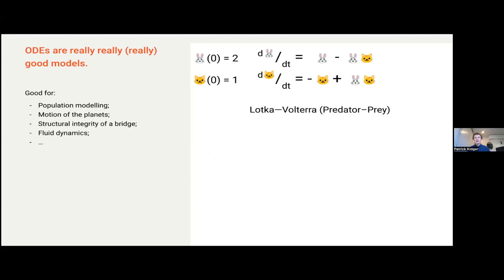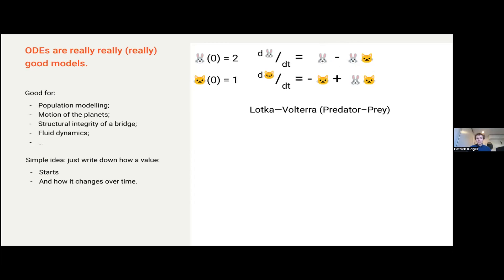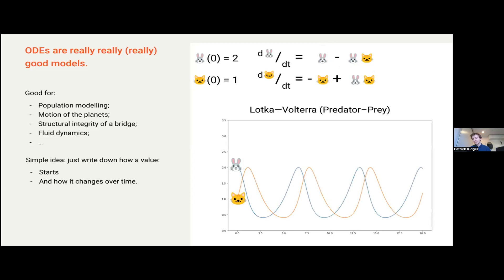These are the Lotka-Volterra predator-prey equations. This is a standard off-the-shelf theoretical model describing the relationship between a predator species — denoted by cats — and a prey species denoted by rabbits. You can see things like d(rabbit)/dt is proportional to the number of rabbits: rabbits beget more rabbits. But this term tells you that rabbits get eaten by cats. So you expect some sort of oscillatory dynamics. A differential equation has this really simple idea: you write down how your value starts, how it changes over time, and then plug it into some numerical ODE solver — bada bing, bada boom, here's my solution.